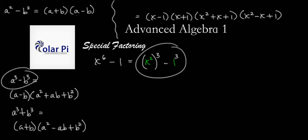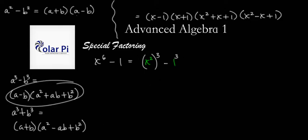You could view this as x squared cubed, and then minus 1 cubed. And now you have to start with difference of cubes. So that is a difference of cubes. It's just that this time, a is x squared and b is 1.